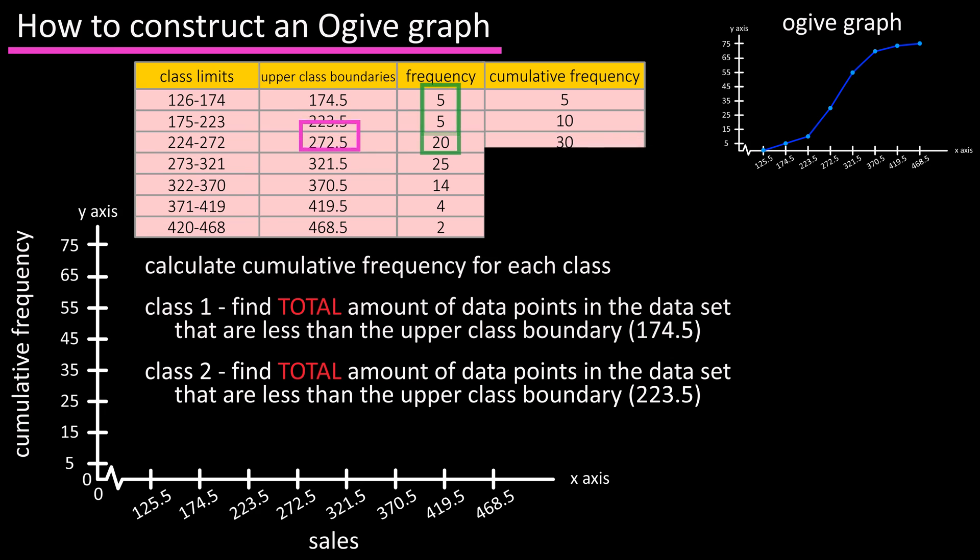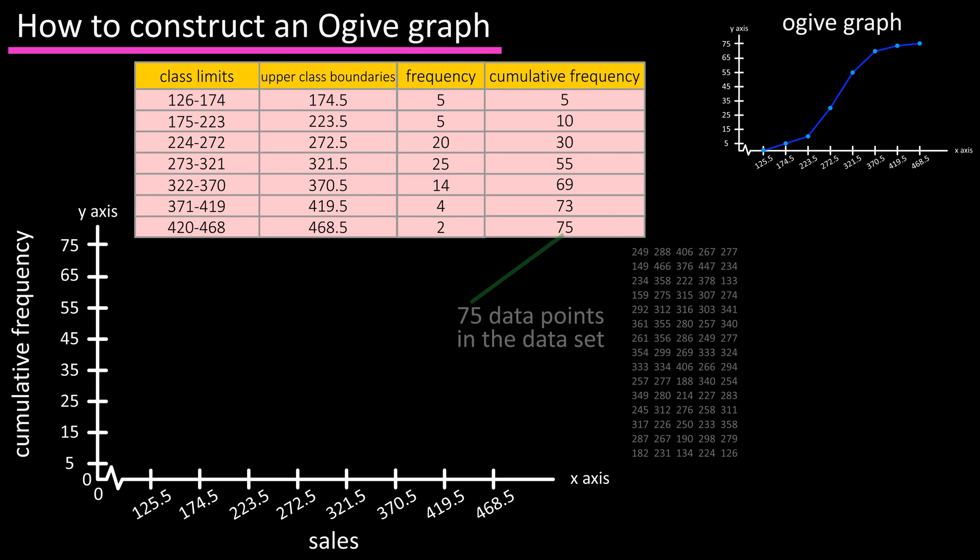For the third class there are 30 values less than 272.5, and we continue this process for the remaining classes. For the seventh and final class we should have 75 because that is the total number of data points in the data set.